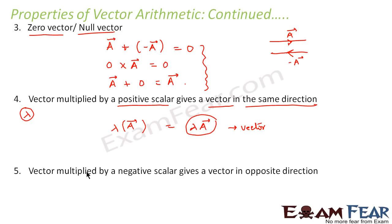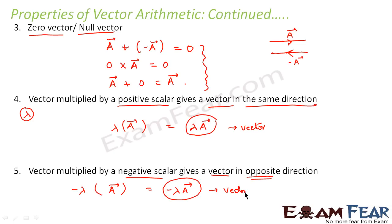The next property states that a vector when multiplied by a negative scalar gives a vector in the opposite direction. If we have vector a and scalar minus lambda, the result is minus lambda a, which is a vector quantity. In this case, the direction is opposite to the direction of a because of the negative sign. So if the sign is positive the resulting vector is in the same direction; if negative, it is in the opposite direction.